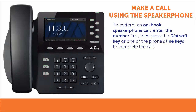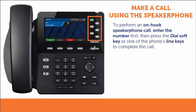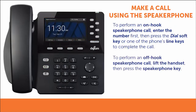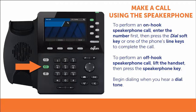Perform an on-hook speakerphone call by entering the extension or phone number you wish to call and pressing either the dial soft key or one of the phone's line keys. If you want to perform an off-hook speakerphone call, lift the handset and press the speakerphone key. When you hear a dial tone over the phone's loudspeaker, you can begin dialing.